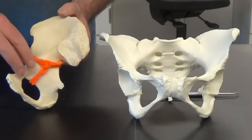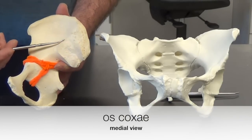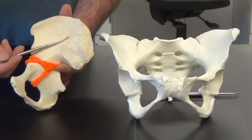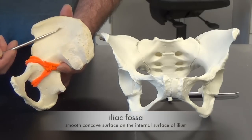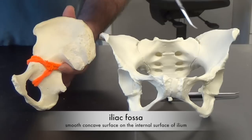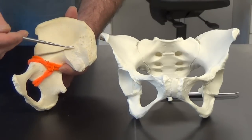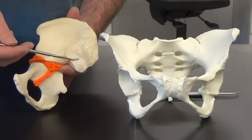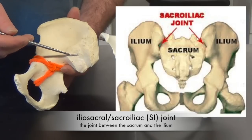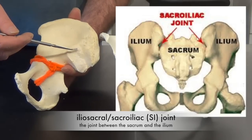Taking a view of the inside, this portion here is called the iliac fossa. It's a shallow depression. We can also see where the ilium articulates with the sacrum at the iliosacral joint.